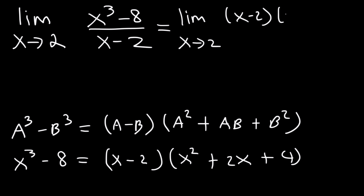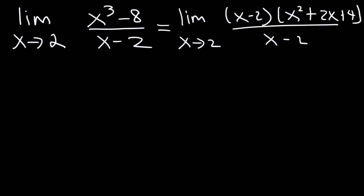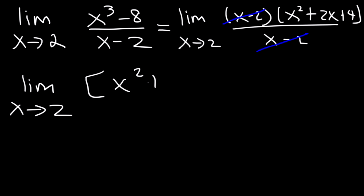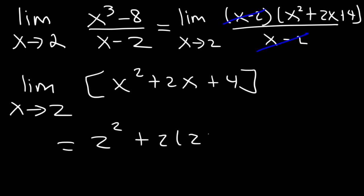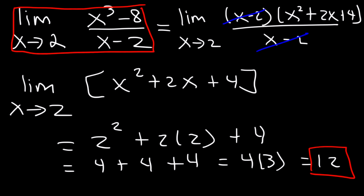So we have the limit as x approaches 2 of x minus 2 times x squared plus 2x plus 4, divided by x minus 2. We cancel x minus 2 and are left with x squared plus 2x plus 4. Using direct substitution: 2 squared plus 2 times 2 plus 4 equals 4 plus 4 plus 4, which is 12. You need to be familiar with the different factoring techniques from algebra.